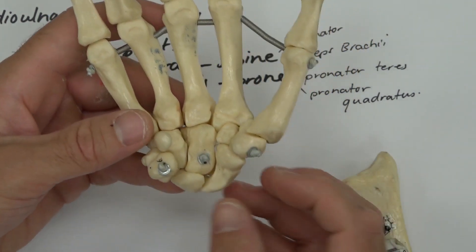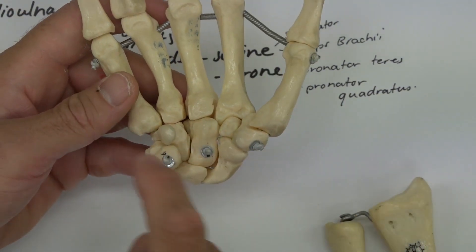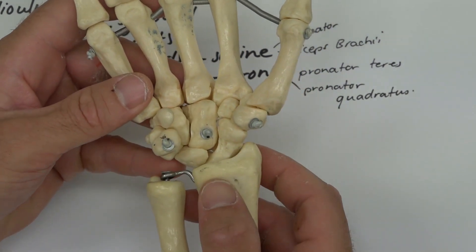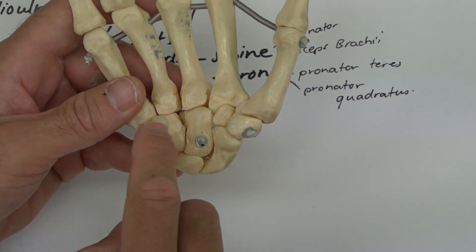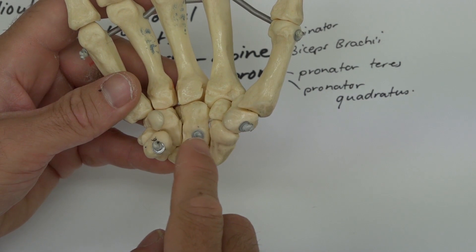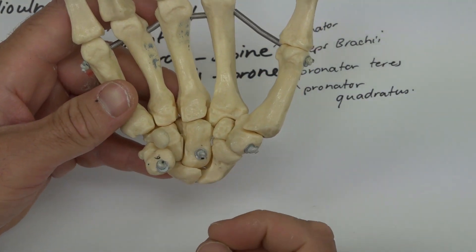The proximal row of bones articulate with the radius, but the distal row articulates with the metacarpals. Here you have your radiocarpal articulation between the distal radius, scaphoid, and lunate. Your midcarpal joint runs between the two rows, and then you have your carpometacarpal joint more distally.